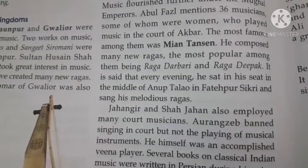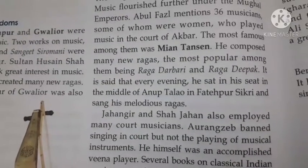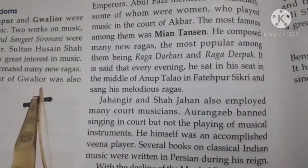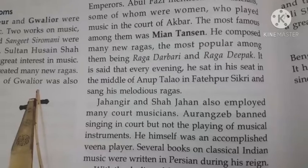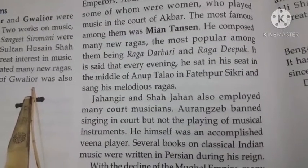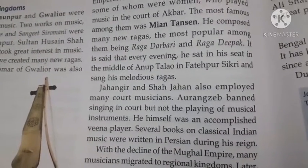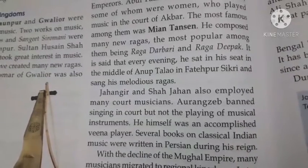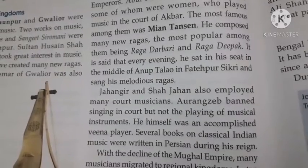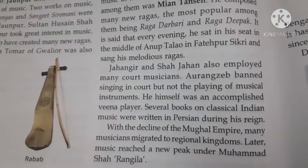Aurangzeb banned singing in court but not the playing of musical instruments. He himself was an accomplished Veena player. Several books on classical Indian music were written in Persian during his reign. With the decline of the Mughal Empire, many musicians migrated to the regional kingdoms.